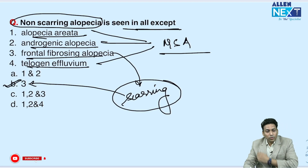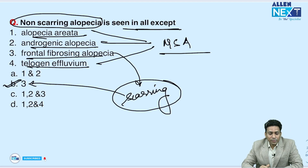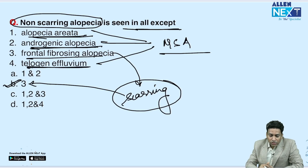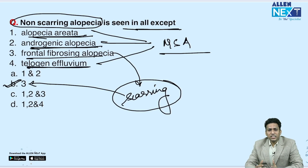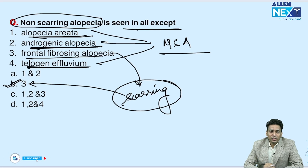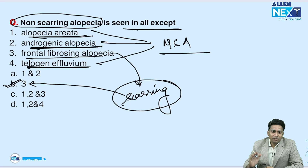Non-scarring types include alopecia areata, androgenetic alopecia, and telogen effluvium. This was a very easy question; I have discussed this in my lectures and always tell students a mnemonic: the ones with 'A' or 'T' are non-scarring types.